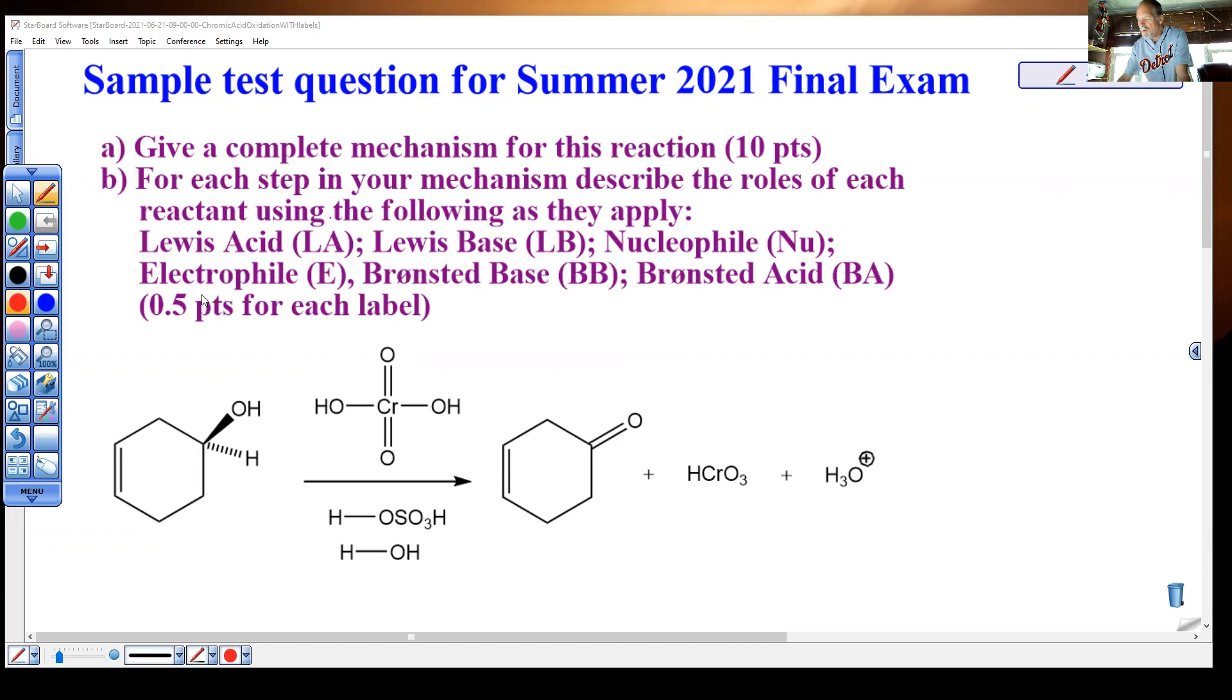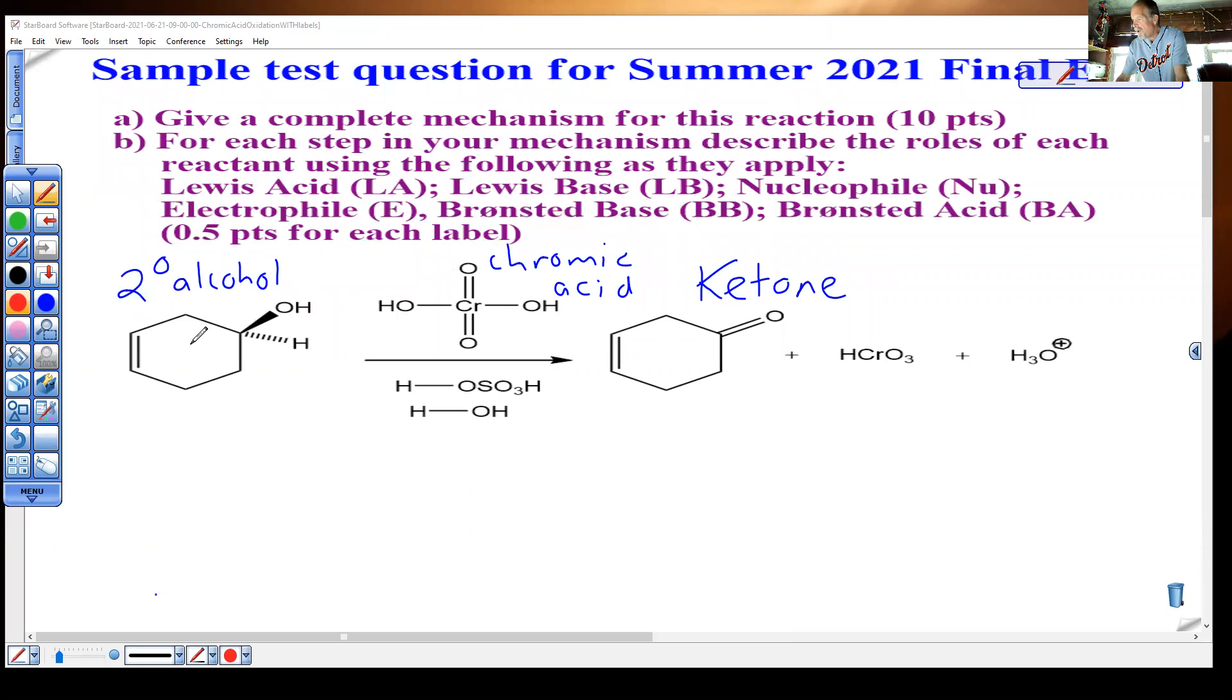This is the version that's blank. We see we're reacting a secondary alcohol with chromic acid and making a ketone. In other videos, you are reminded that you need two methods to make chromic acid. Both involve sulfuric acid and water. One method uses potassium dichromate, and the other method uses chromium trioxide to make chromic acid.